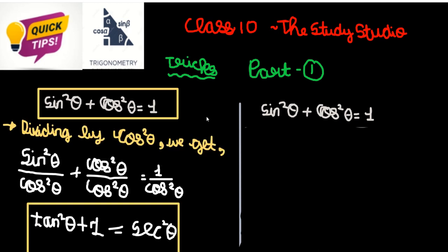So, first of all, dividing by cos square theta. What we did is we divided the entire series by cos square theta. What are we getting? First look, we get sin square theta by cos square theta plus cos square by cos square is equal to 1 by cos square theta.